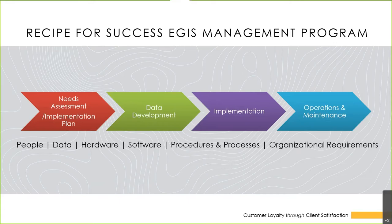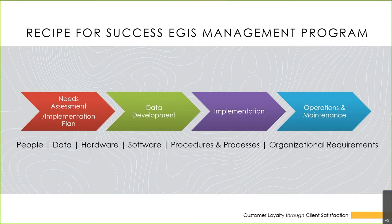The data development piece is critical — data needs to be standardized so you can take advantage of what an EGIS management program offers. For catch basin inspections or locating hydrants, you need solid base data in a common standard format. Then comes implementation: dialing up the program, training people, making sure it functions as described in the implementation plan — which is basically a road map to your final goal. Operations and maintenance of the program also need ongoing attention, tracking enhancements, hardware changes, and software changes.